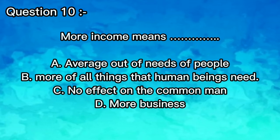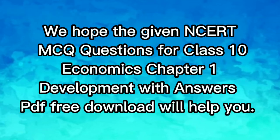Question 10: More income means A) average out needs of people, B) more of all things that human beings need, C) no effect on the common man, D) more business. The answer is B — more of all things that human beings need.